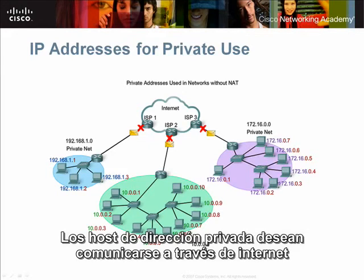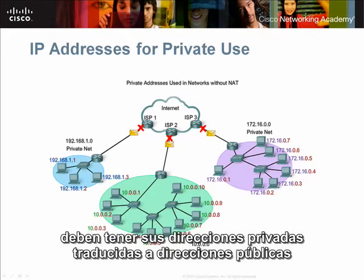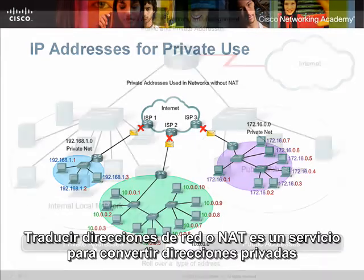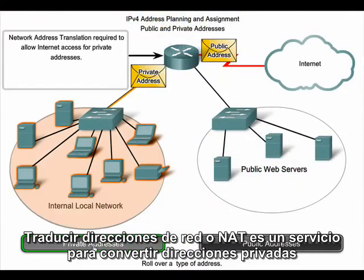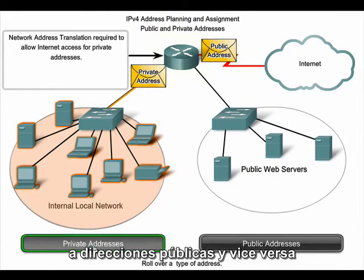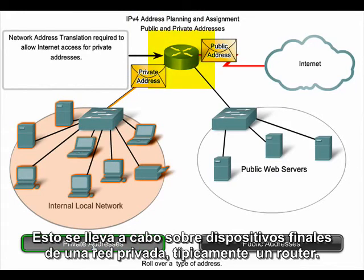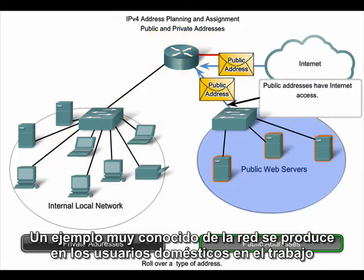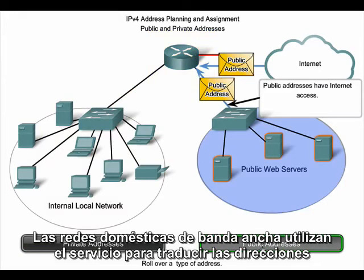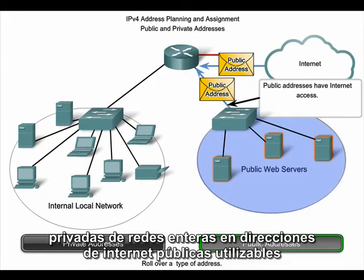Privately addressed hosts that wish to communicate over the Internet must have their private addresses translated into public addresses. Network address translation, or NAT, is a service that converts private addresses to public addresses and vice versa. NAT is implemented on a device at the edge of the private network, typically a router. One popular example occurs on a home user's network, where home broadband networks use this service to translate private addresses into Internet-usable public addresses.